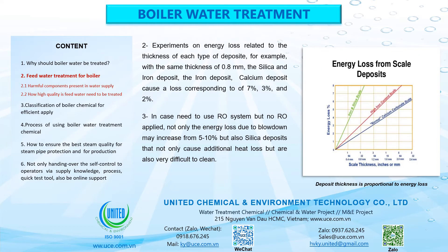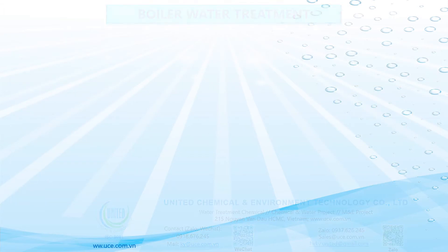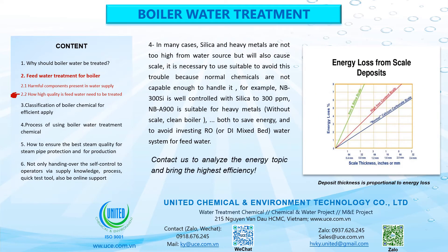2. Experiments on energy loss related to the thickness of each type of deposit show that with the same thickness of 0.8 mm, silica and iron deposits cause losses of 7%, iron deposit 3%, and calcium deposit 2%. 3. In cases where an RO system is needed but not applied, energy loss due to blowdown may increase from 5% to 10%, and silica deposits not only cause additional heat loss but are also very difficult to clean. 4. In many cases, silica and heavy metals may not be too high from the water source but will still cause scale. It is necessary to use suitable chemicals; for example, NB-300C is well-controlled for silica up to 300 ppm, and NB-A900 is suitable for heavy metals — without scale and with a clean boiler — to save energy and avoid investing in RO or D-mixed bed water systems for feed water.